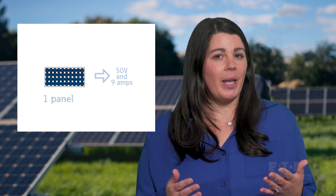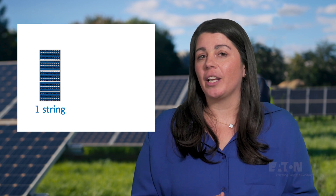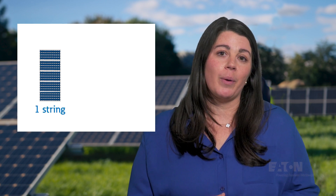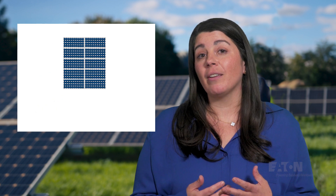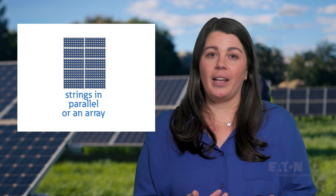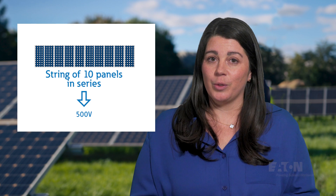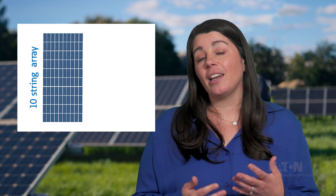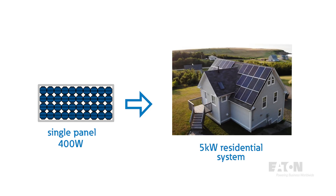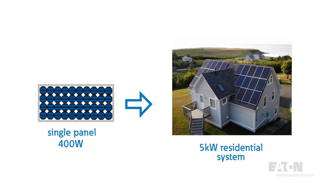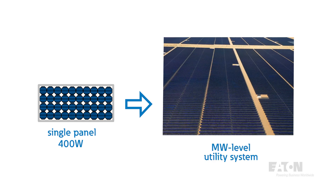So we connect multiple panels in series, which we call a string, to increase the voltage output. We also connect multiple strings in parallel to increase the current output, and we call that an array. So 10 panels in series will create a string that generates 500 volts, and an array of 10 of these strings can generate about 90 amps. This is how we can take a single panel that can generate about 400 watts and scale it to any size system, from a 5kW residential system to a megawatt level utility system.